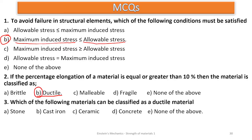Number three: which of the following materials can be classified as ductile? The options are stone, cast iron, ceramic, and concrete — and the answer is none of them. All of these are brittle materials, so none of them is a ductile material.